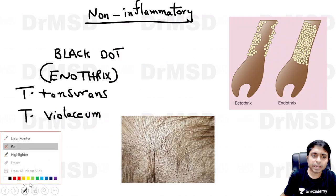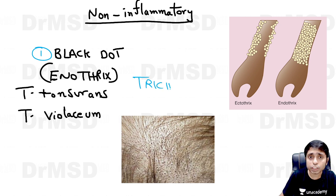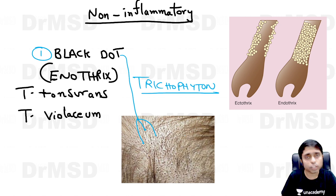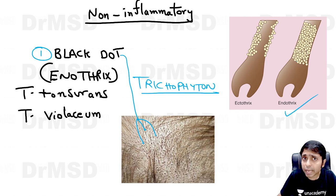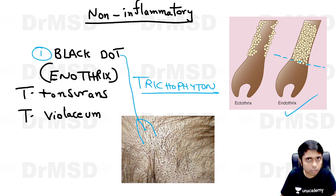In the non-inflammatory type, the black dot type of Tinea capitis is caused by Trichophyton tonsurans and Trichophyton violaceum. If you observe the image carefully, you can see tiny black dots in the patch of hair loss. The reason is that in this endothrix variety, the spores and hyphae enter into the hair follicle, causing damage and weakening of the hair. The hair is lost just above the scalp, which is why you clinically see black dots.